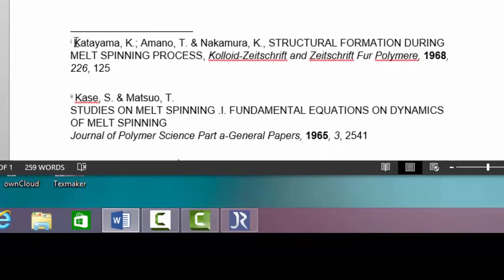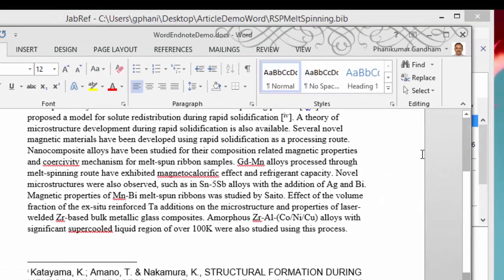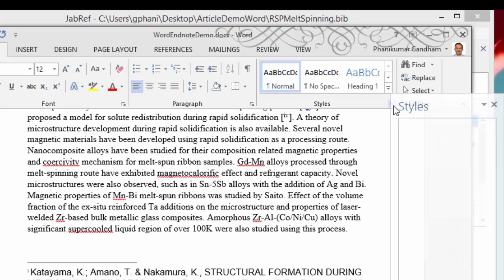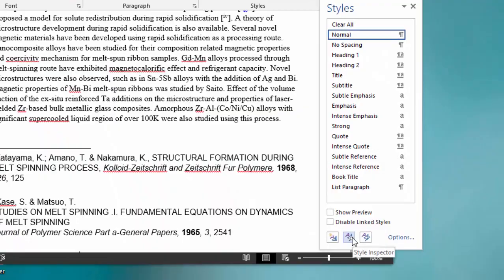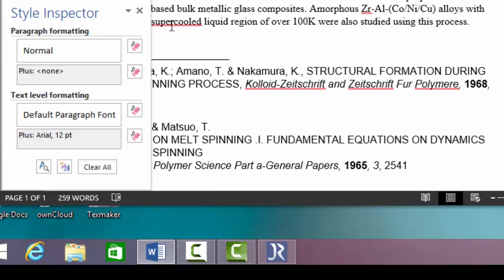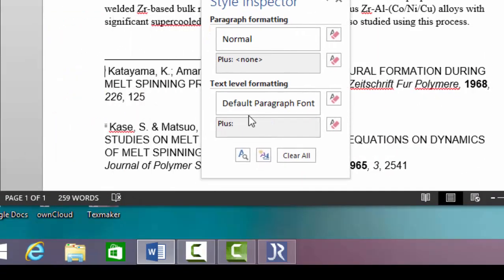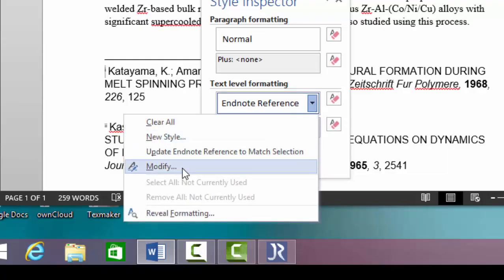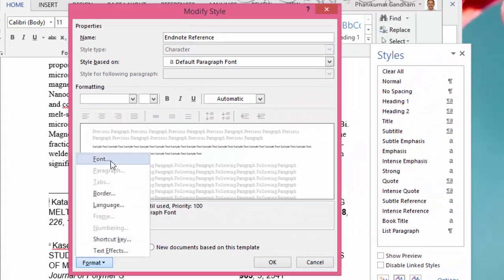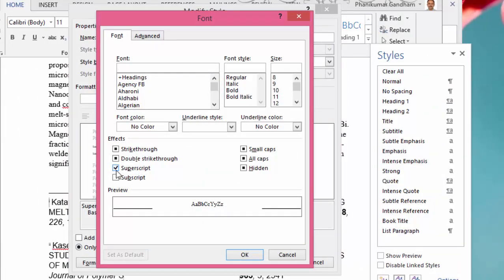The EndNote reference is coming in roman letters, but we could change it to the arabic format using what is called the style inspector. Go to home, then styles, then at the center of the bottom you have style inspector. Click on that, highlight the EndNote reference, and you would see that it has detected the EndNote reference format. Open the dialog here and modify. The font has superscript, so we remove that and say ok.